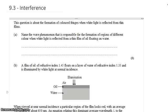David Kahn here with a question from the Question Bank in topic 9.3, interference. We're looking at thin film interference. This question is about the formulation of colored fringes when white light is reflected from thin films.